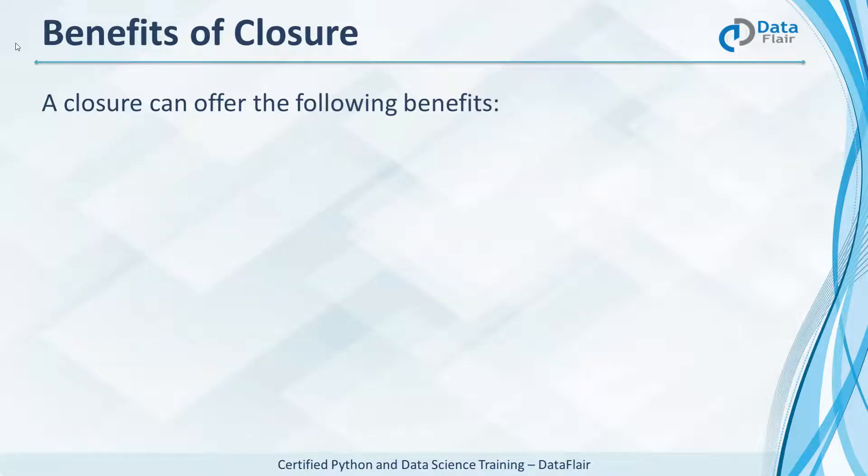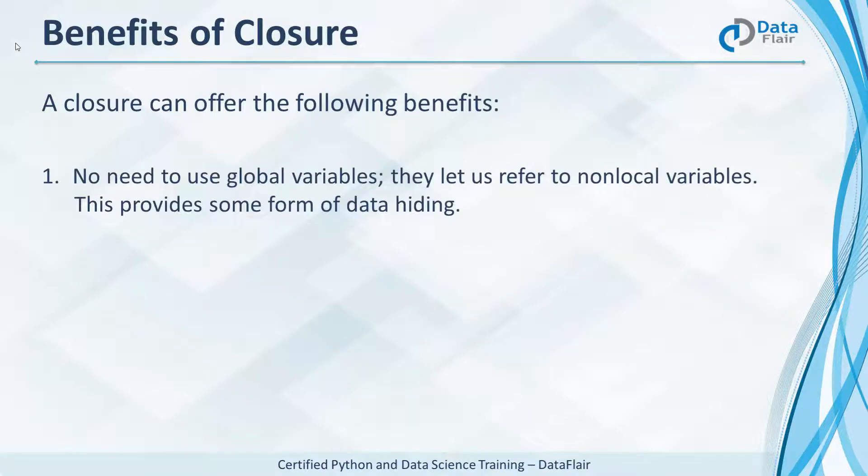Using a closure brings with it the following advantages. Since closures let us refer to non-local variables, we don't need to declare global ones. This is data hiding.